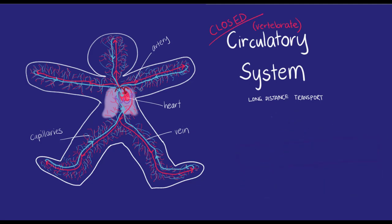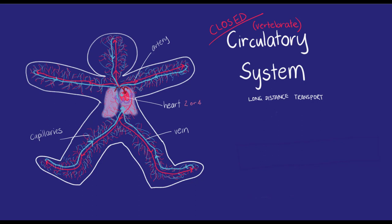All vertebrates have a heart with two or four chambers, or atria and ventricles. They also have blood vessels of three types: arteries, veins, and capillaries.